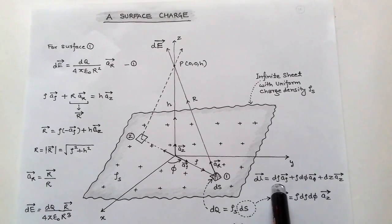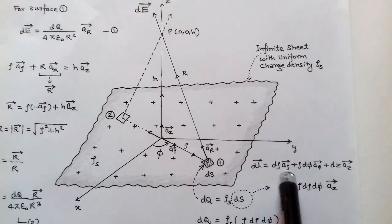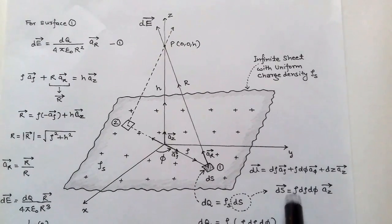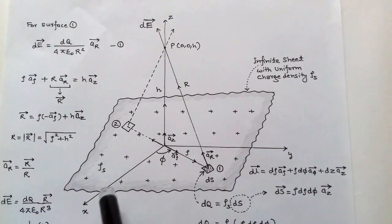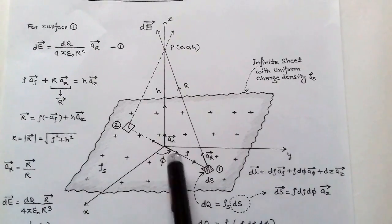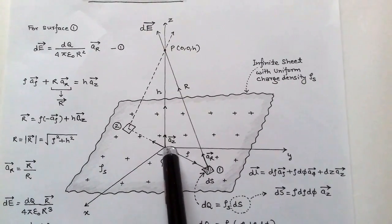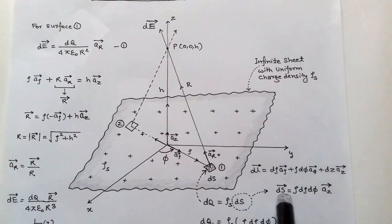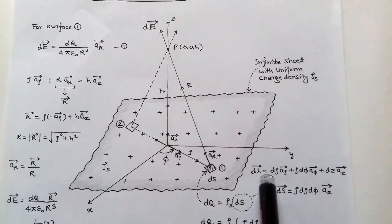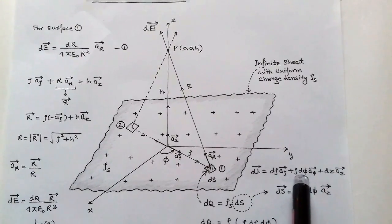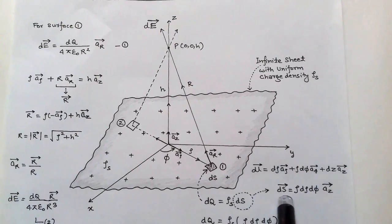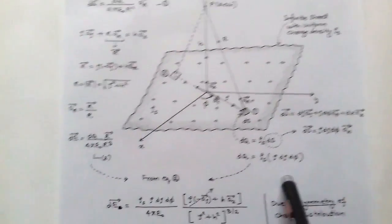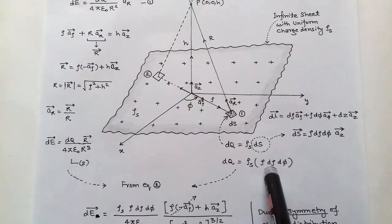The differential length dl in the cylindrical coordinate system is dρ â_ρ + ρ dφ â_φ + dz â_z. Since this infinite sheet is situated at z = 0, that is the xy plane, its normal direction is towards z. Therefore, the differential surface in the z direction equals dρ · ρ dφ in the â_z direction, and the magnitude of ds is ρ dρ dφ.